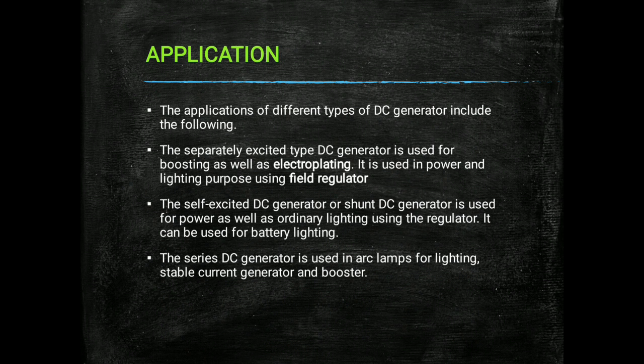The series DC generator — where the field winding is connected in series with the armature — is used in arc lamps for lighting, as a stable current generator, and as a booster. A shunt generator is one where the field winding is connected in parallel with the armature.